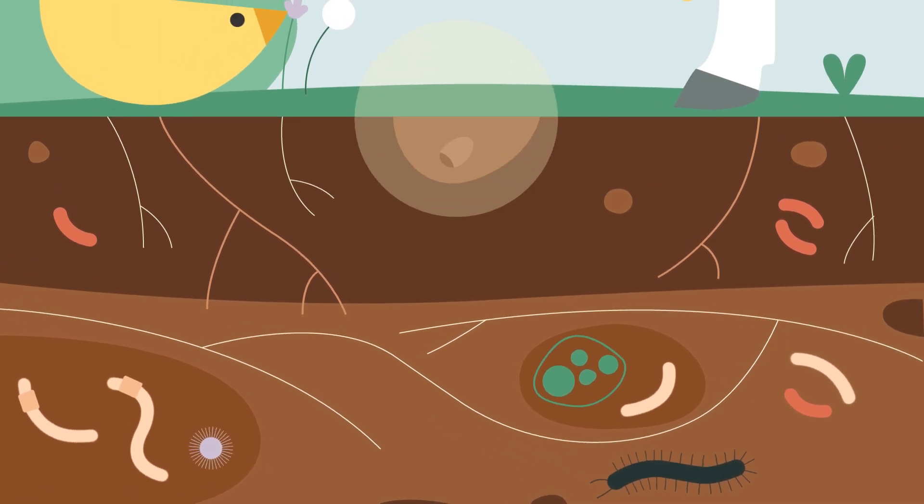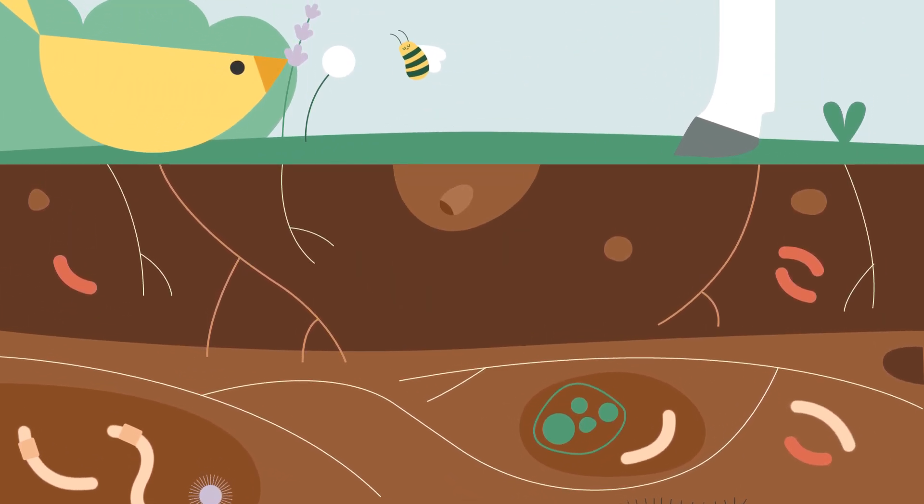Regenerative farming pushes the seed to adapt and collaborate within an ecosystem. Conventional farming isolates it, making it dependent on chemical inputs and turning everything around it into competition.